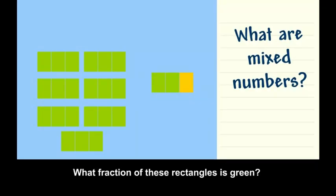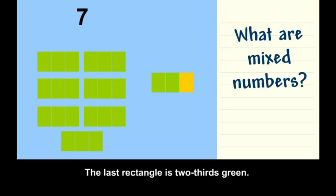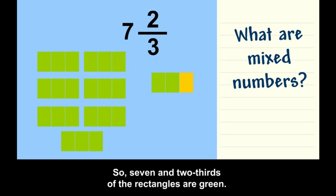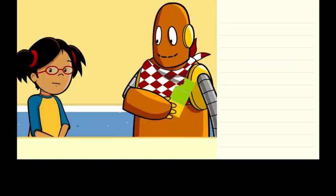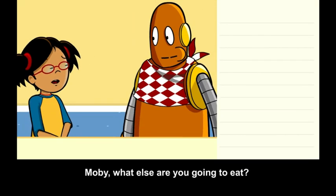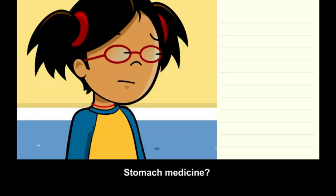What fraction of these rectangles is green? There are seven rectangles that are all green. The last rectangle is two-thirds green. So seven and two-thirds of the rectangles are green. Moby, what else are you going to eat? Stomach medicine.